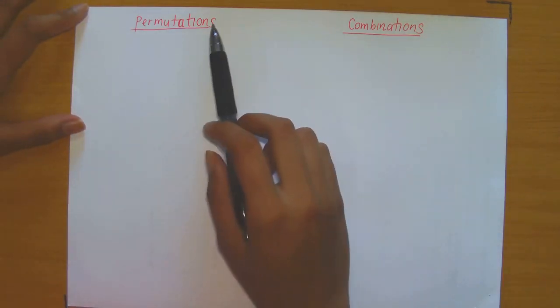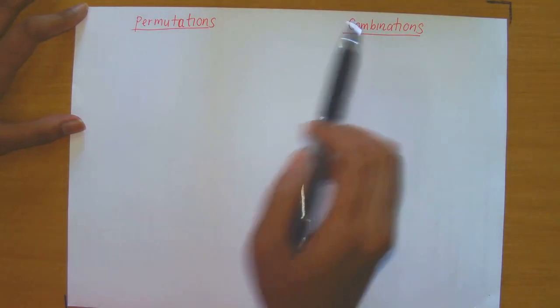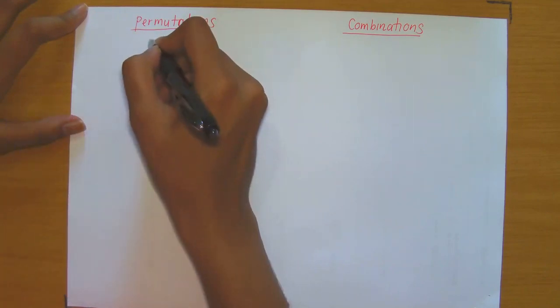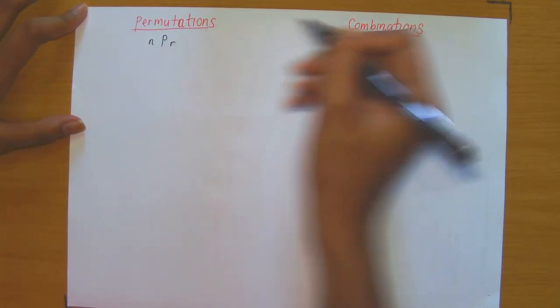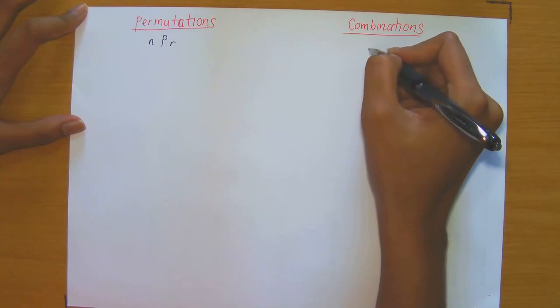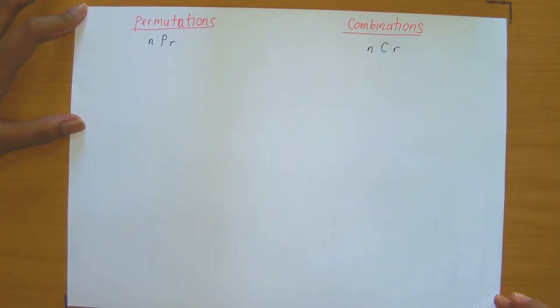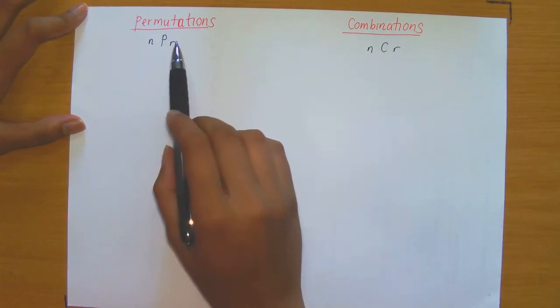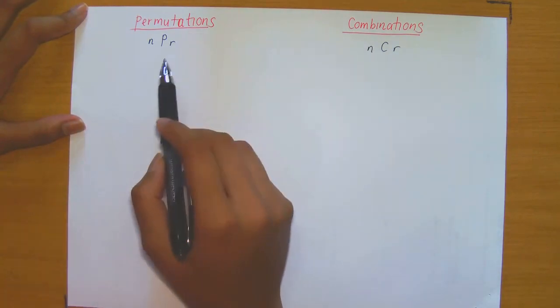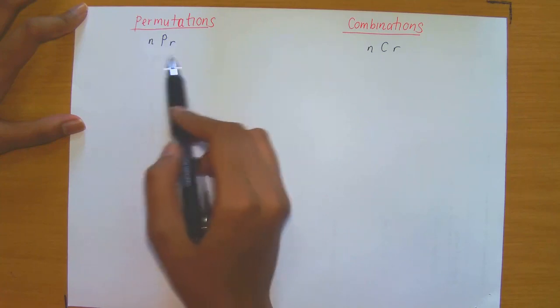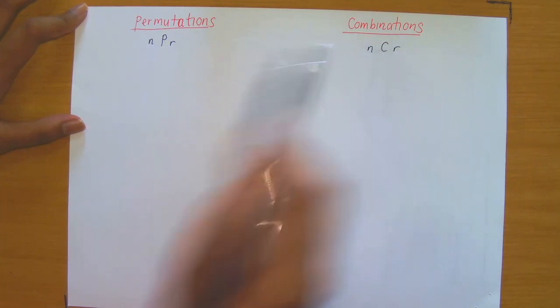In this video, I'm going to be discussing the similarities and differences between permutations and combinations. Permutations are represented by NPR and combinations by NCR. That's the notation we use, and this is precisely the notation used on your calculator. Take a moment to look at your Casio calculator and find these buttons.